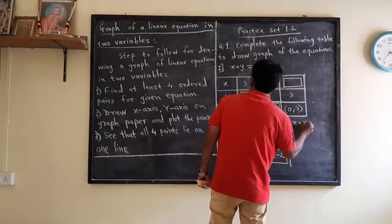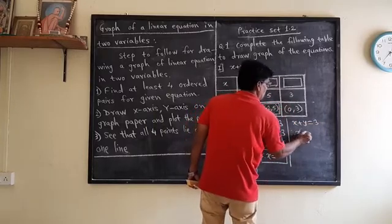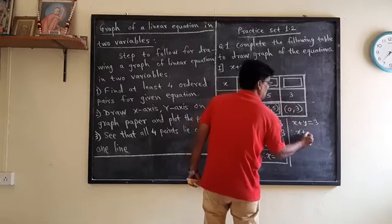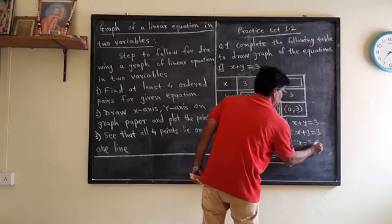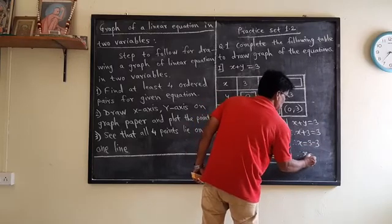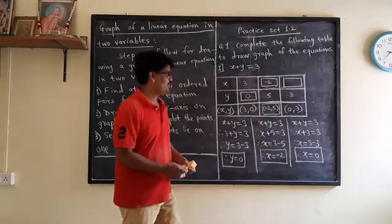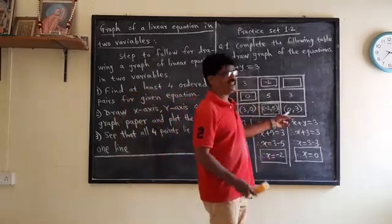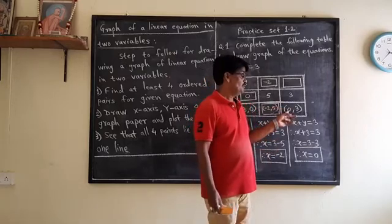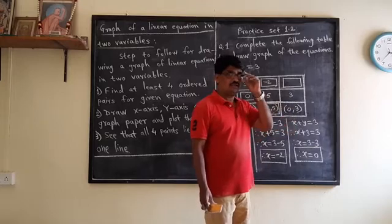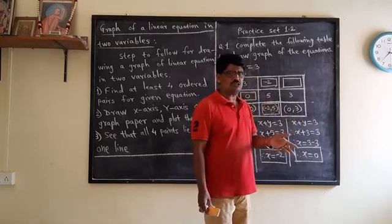x plus y is equal to 3. When you have x to the final, y is equal to 3. x is equal to 3 minus 3. x is equal to 0. This is the level of minus 2.